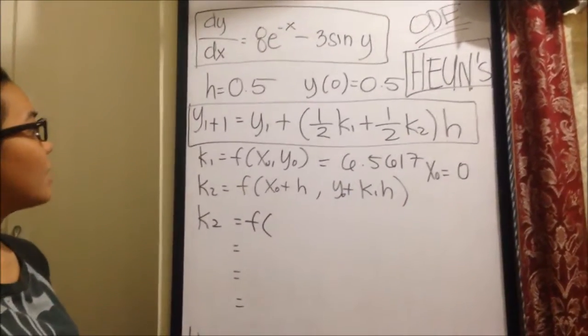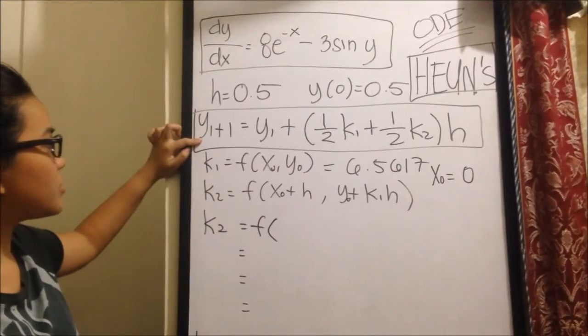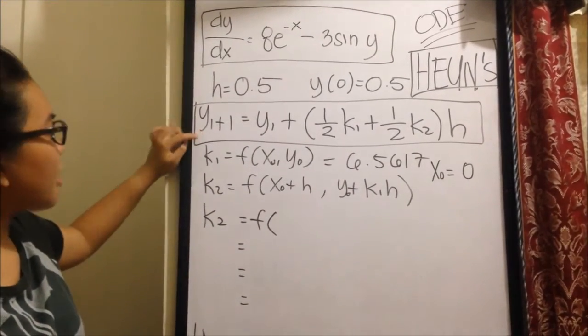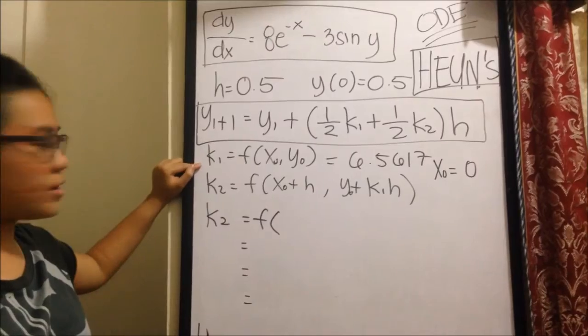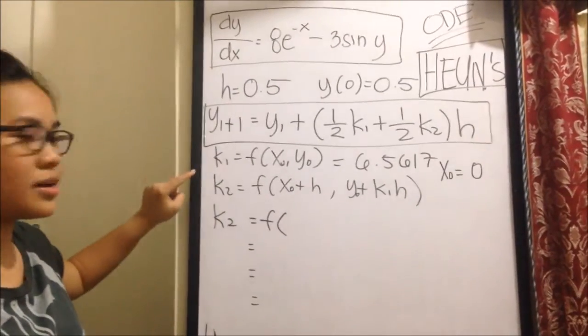So, we have the formula for the Heun's, which is this one. We already have the K1 from the earlier, and now we have to solve for K2.